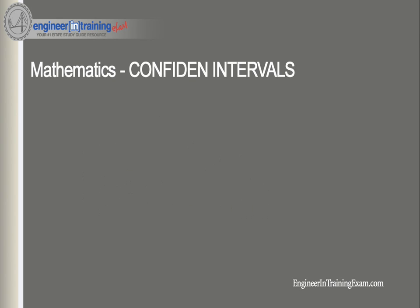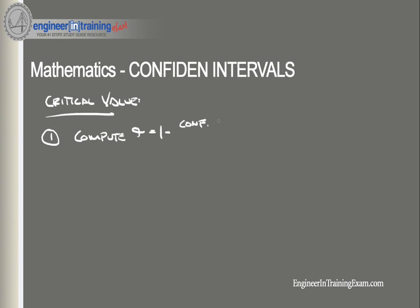Now let's talk about how you find the critical value. There is a process to doing this. The first step is to compute alpha, where alpha is equal to 1 minus the confidence level divided by 100 — so whether that's 90, 95, or 99 percent, that gives you alpha.